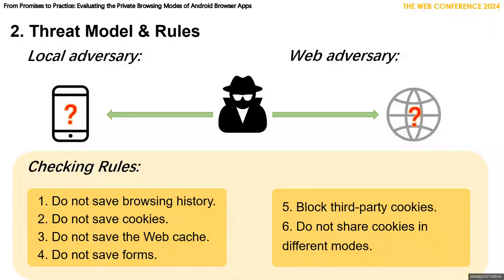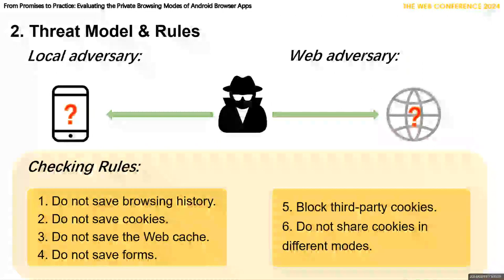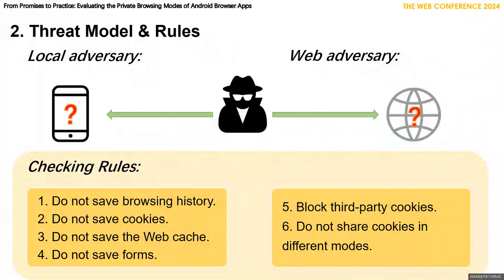We proposed six rules to systematically evaluate whether the browser effectively implements private browsing against the two adversaries. In particular, we proposed these rules based on two considerations: one, the private browsing features of PC browsers discussed in previous work; and two, the private browsing capabilities promised by the app developers.